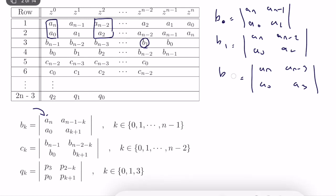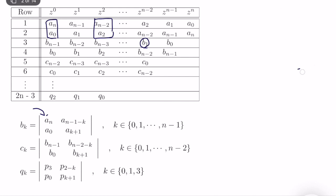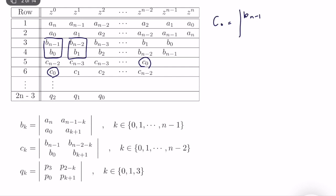The idea of computing c's is exactly the same. To compute c0, pick the first column of the b rows and the second column. c0 equals the determinant of b(n-1), b(n-2), b0, b1. We can do the same for c1, c2, c3, and continue to d — until we have only three elements left in the Jury table.